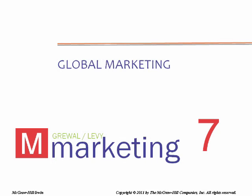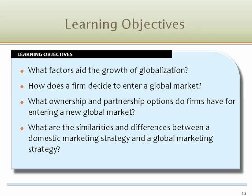Chapter 7: Global Marketing. These questions are the learning objectives guiding the chapter and will be explored in more detail in the following slides. What factors aid the growth of globalization? How does a firm decide to enter a global market? What ownership and partnership options do firms have for entering a new global market? What are the similarities and differences between a domestic marketing strategy and a global marketing strategy?